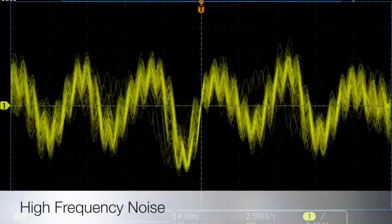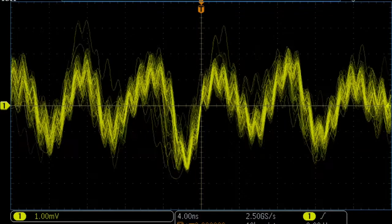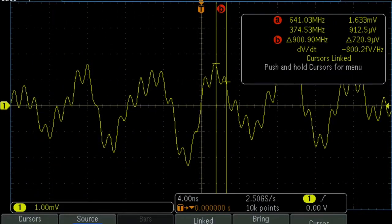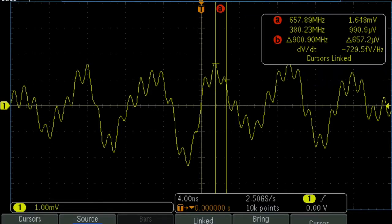In the time domain display, we see that the dominant noise is at about 900 megahertz.